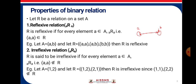Let R be a relation on set A. The first property is Reflexive Relation. R is reflexive if, for every element a which belongs to the set A, a is related to a. Consider the example: set A has elements {A, B} and relation R has pairs (A,A), (A,B), (B,B). Then R is reflexive. You can see from the digraph that A is related to A and B is related to B.